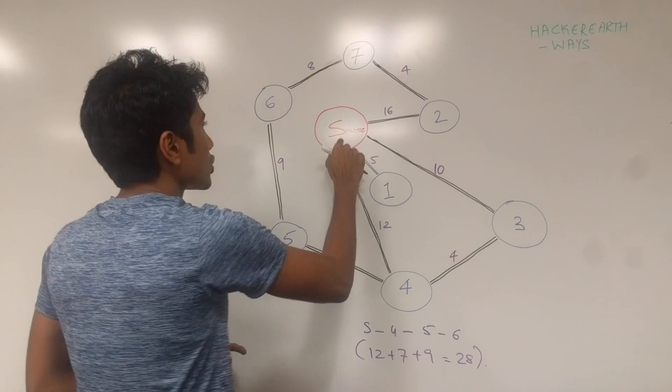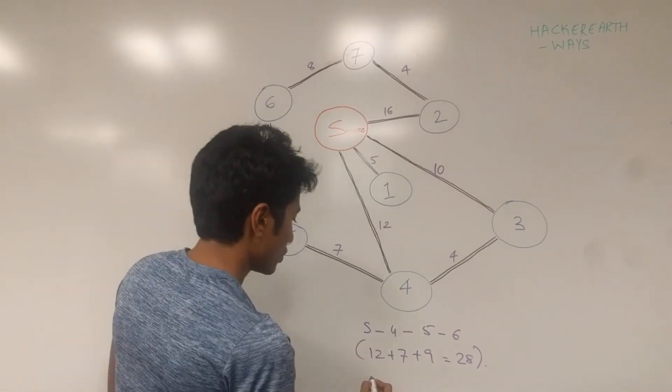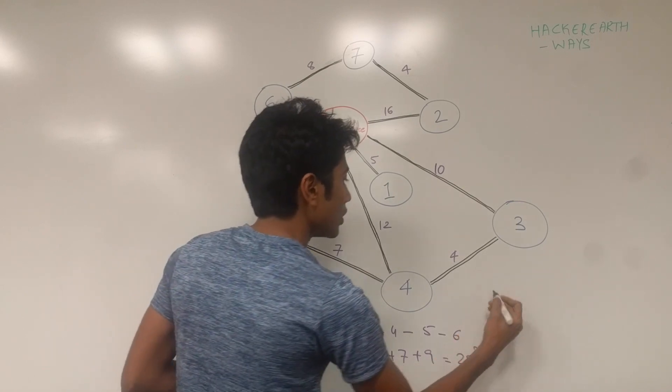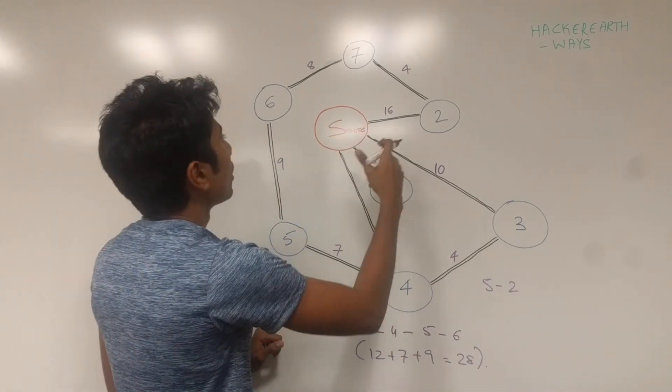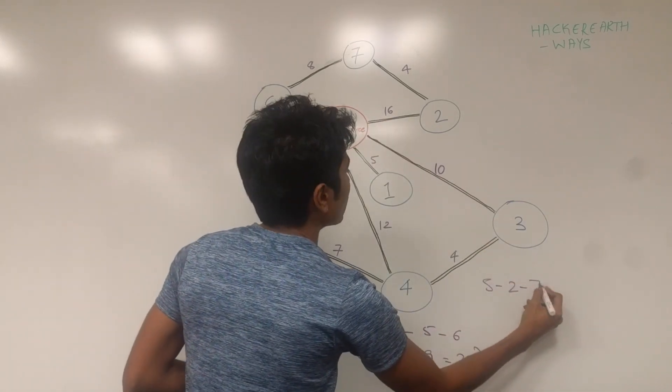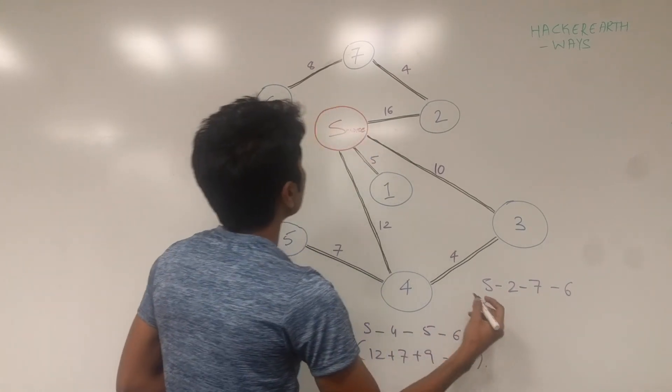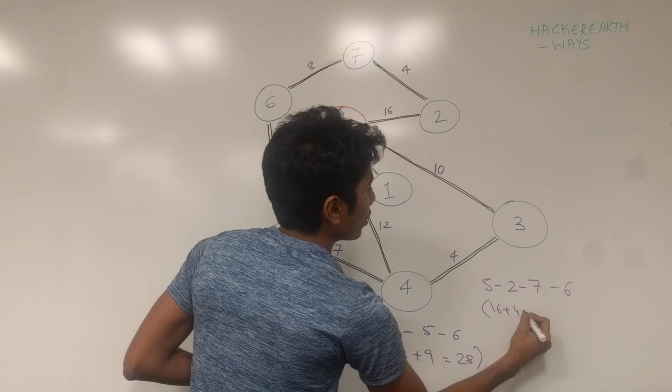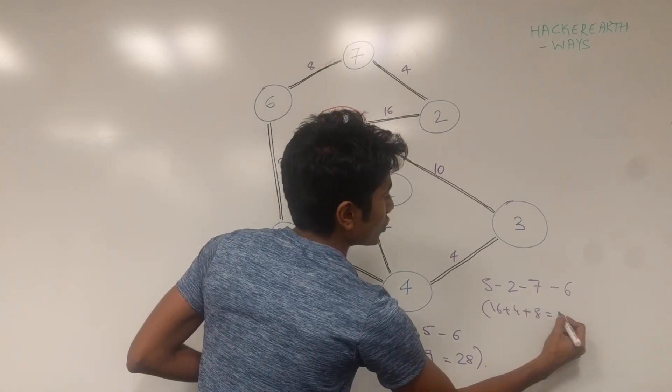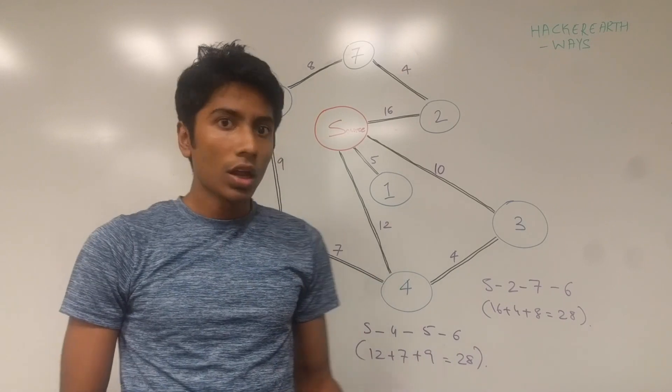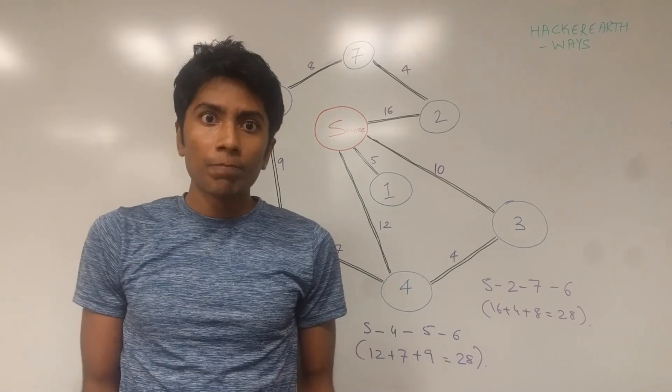And have a look at source to 2. Source to 2 to 7 and then to 6. Source to 6 again gives you 16 plus 4 which is 20 plus 8 which is 28. Both these paths are equal. They are the shortest possible, but they are different.